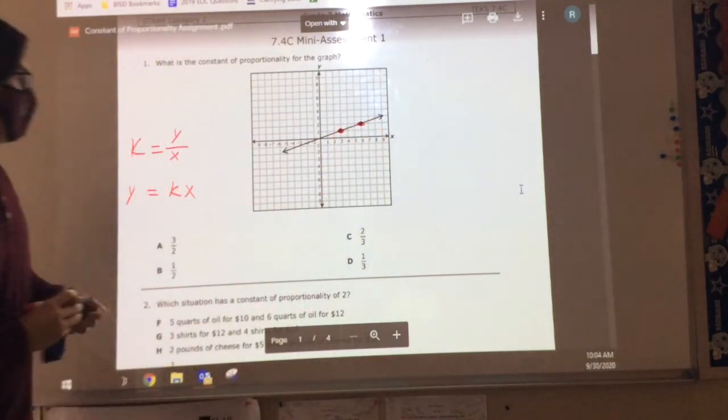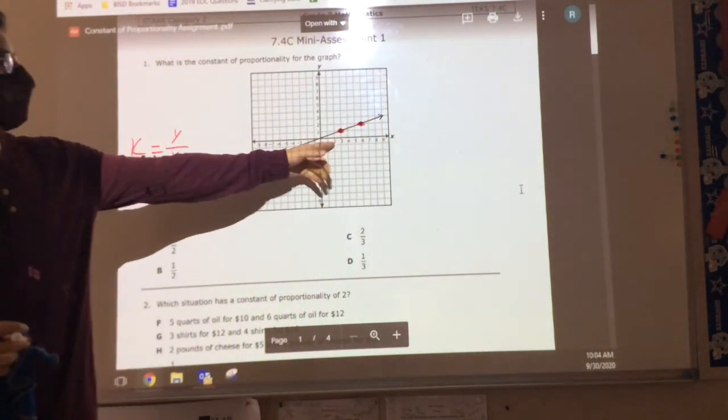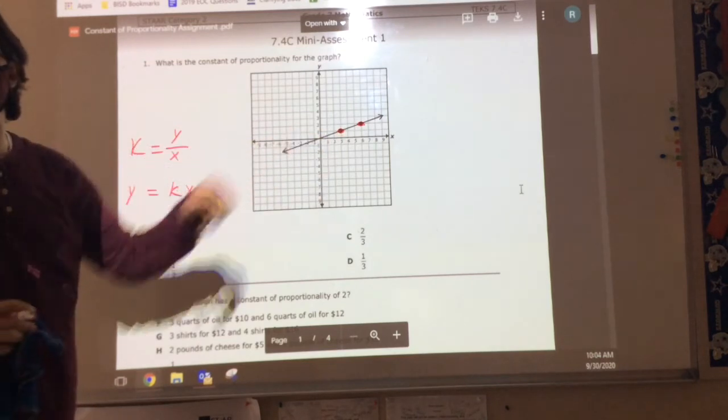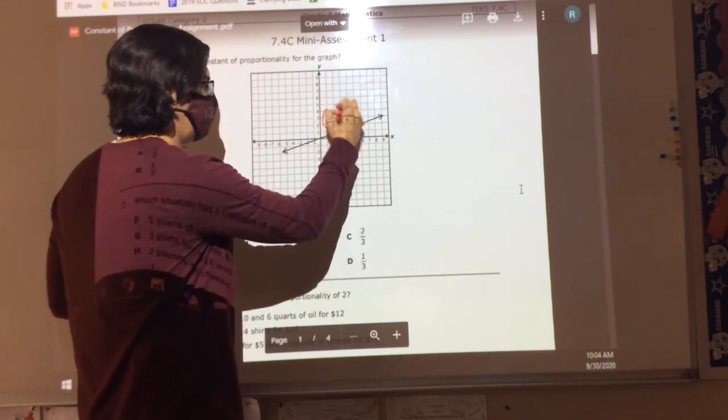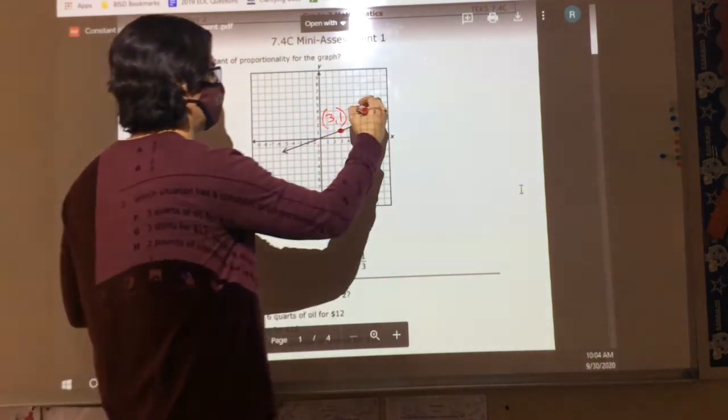Do we agree that it's giving me two points right here? Yes. So here's what I'm going to do. I'm going to take the y value of this point. Well, first of all, what is this ordered pair? Does anybody remember how to do ordered pairs? Yeah, good. This is 3-1. And then this one over here would be 6-2.